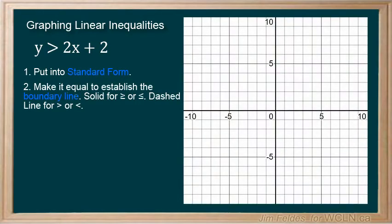If the inequality includes equal to, we use a solid line to show that it's part of the solution. Our example does not include equal to, so a dashed line is used to show that it's not part of the solution.